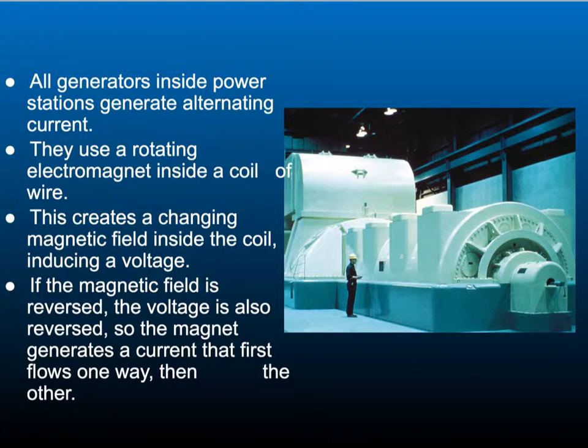All generators inside power stations generate alternating current using the dynamo effect. They use a rotating electromagnet inside a coil of wire. This creates a changing magnetic field inside the coil, inducing a voltage. If the magnetic field is reversed, the voltage is also reversed, so the magnet generates a current that first flows one way, then the other.